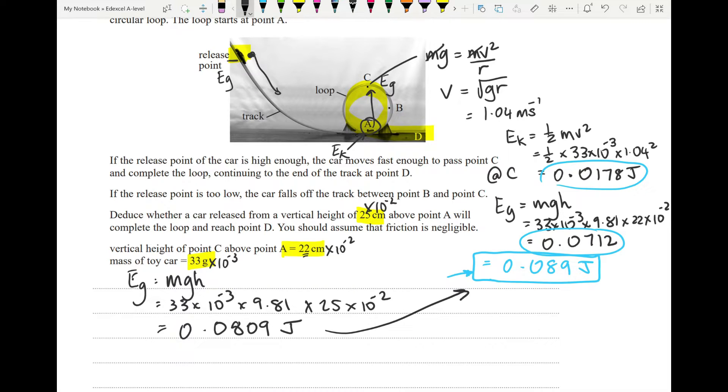Now look at these two. This is how much it has at the start. This is how much it needs. Those are not equal, it needs more than it's getting, so no. If you release it from 25, it is not going to stay on the track.